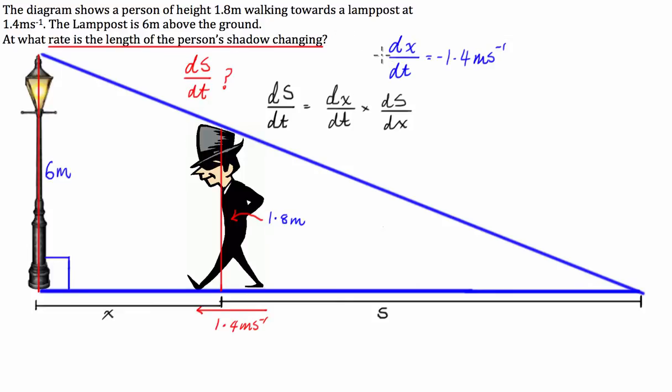We have been given this one. What we need to find is a relationship between the shadow and x, and this is where the similar triangles come in.